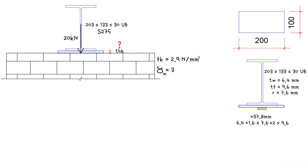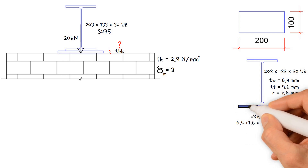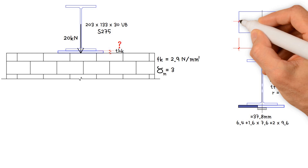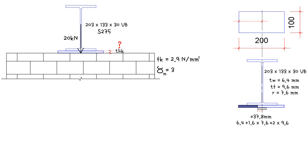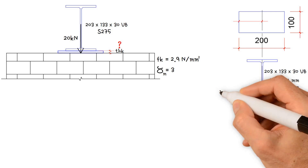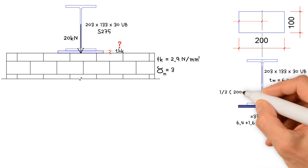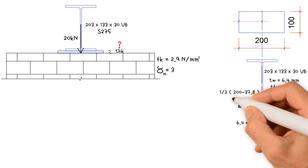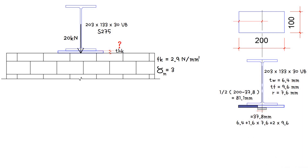Next, we need to work out the bearing plate projection beyond the stiff bearing length, which equals half of plate length minus stiff bearing length. We know the plate length is 200 mm, and we calculated the stiff bearing length as 37.8 mm. Hence, the bearing plate projection equals (200 mm / 2) − 37.8 mm, which results in 81.1 mm.